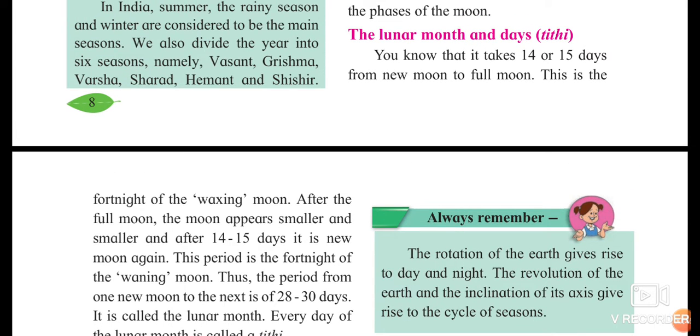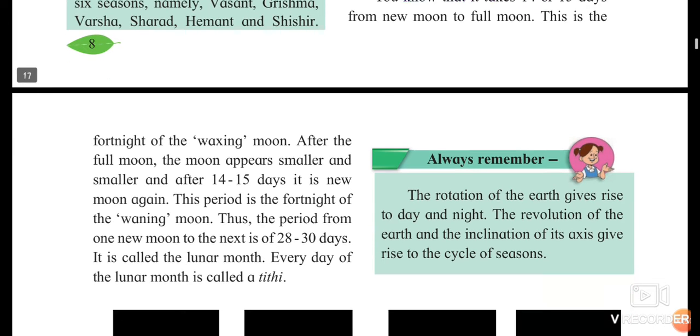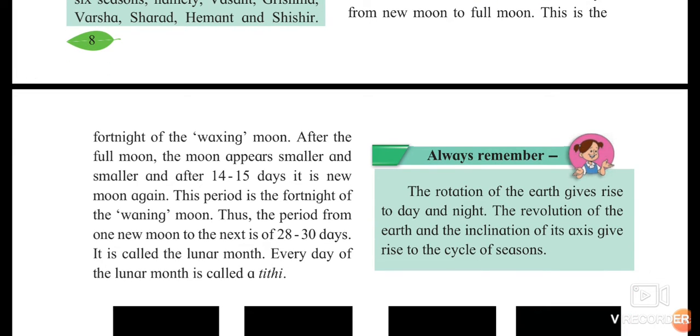You can see over here the lunar month and the days. What is the lunar month? From one full moon to another full moon, it is 28 to 30 days, and this is called the lunar month. What is tithi? Each and every day of the lunar month is called as tithi.